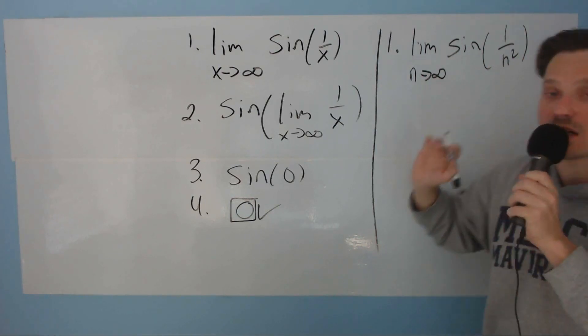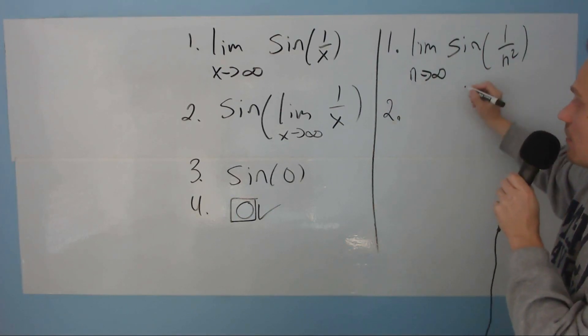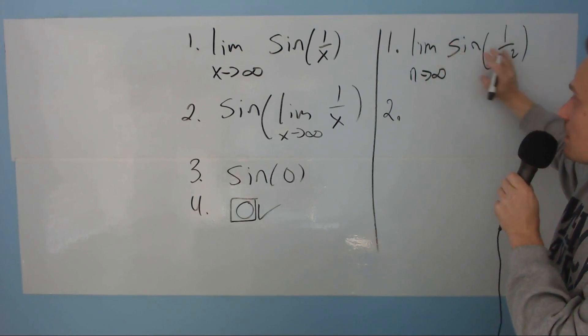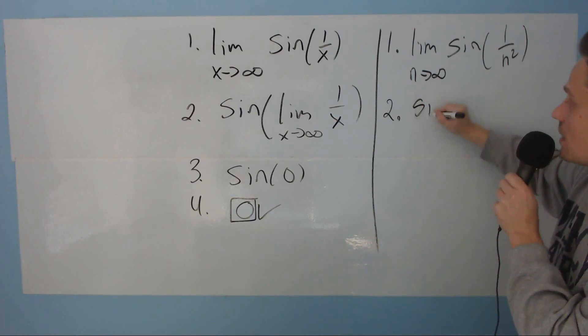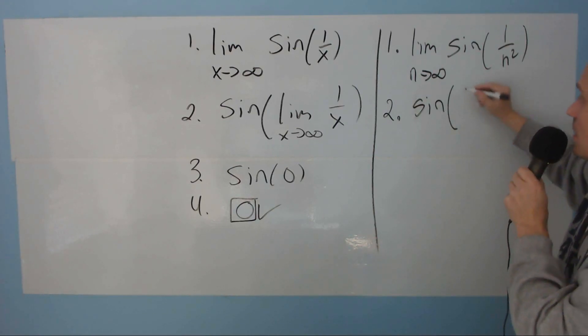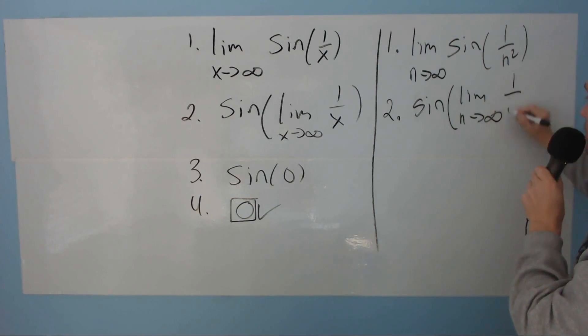You should pause the video and try it on your own. I'll do it anyway. It looks like this. Basically, again, you slip the limit into the function, so it ends up being the following. Not the limit anymore, but the sine of the limit as n goes towards positive infinity of 1 over n squared.